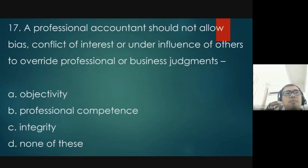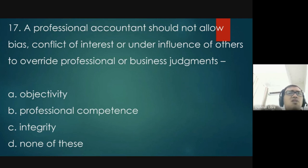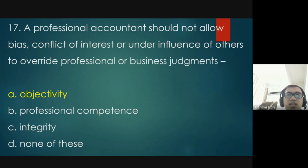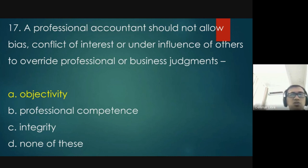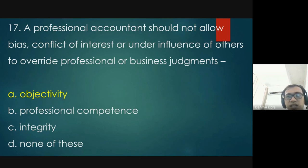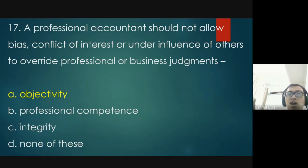Question 17: a professional accountant should not allow bias, conflict of interest, or undue influence of others to override professional or business judgment. The answer is objectivity. Being objective is the opposite of being subjective. As professionals, when we judge or decide, it should be based on facts, information, and history — not on personal feelings or relationships.